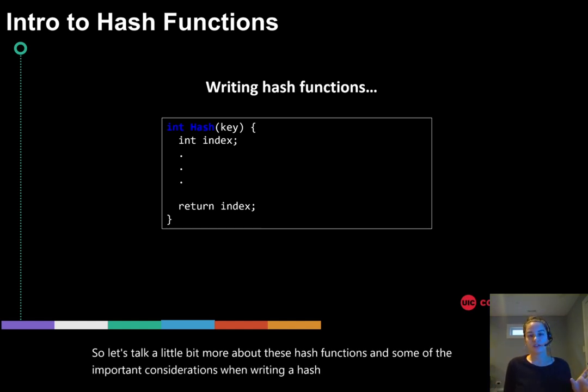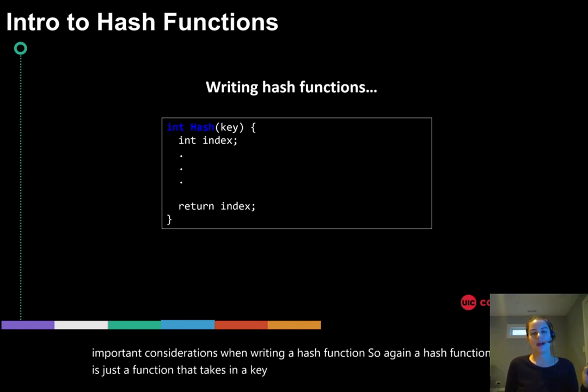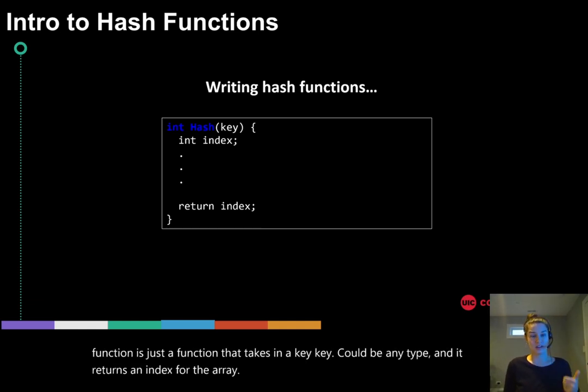So again, a hash function is just a function that takes in a key, the key could be any type, and it returns an index for the array of where the data for that key is stored.